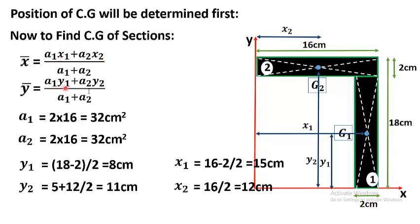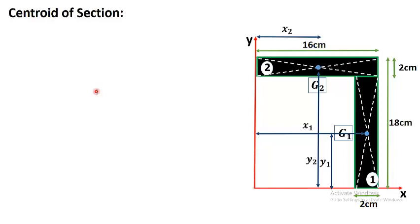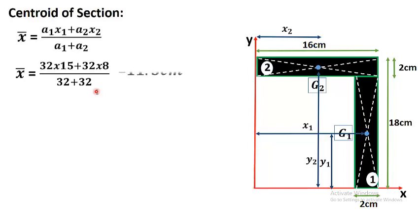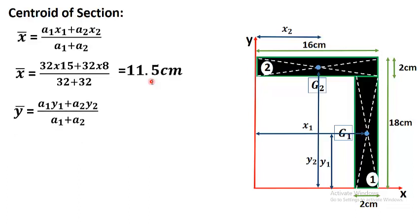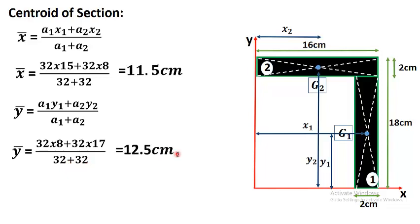Now we have calculated all required values: A1, x1, A2, x2, y1, and y2. Putting these into the area moment method formulas, we get x̄ = 11.5 centimeters. Similarly, substituting the values for ȳ using A1·y1 and A2·y2, we get ȳ = 12.5 centimeters.